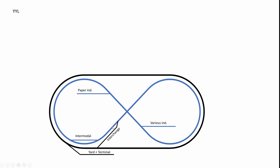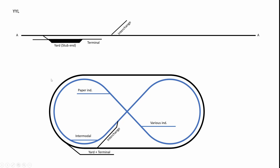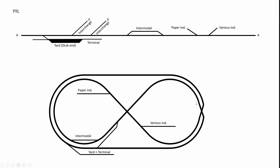The first operating option is to ignore all crossovers and set them all straight - giving you two totally separated lines except for the interchange track where you can send cars from one track to the other. On the schematic: the black line has the yard and terminal with the interchange track diving off as the blue line, giving you paper industry, another industry, and the intermodal yard.